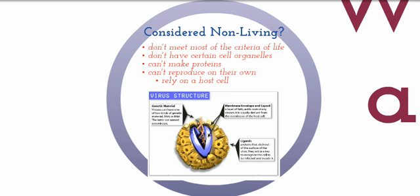Consider non-living: Viruses do not meet most of the criteria of life, such as they cannot respond to stimulus, they cannot grow and develop, and they cannot adapt to the environment. They also don't have certain cell organelles like cell membranes, cytoplasm, and ribosomes. Without these structures, they are unable to make proteins or reproduce on their own, so they depend on a host cell to synthesize their proteins and to make copies of themselves.